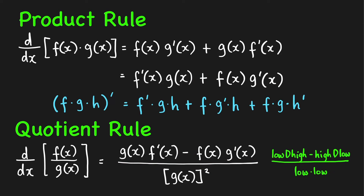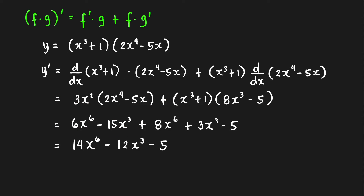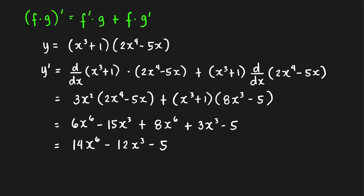Let's have some examples. First example: suppose we have y, which is a product of (x³ + 1) and (2x⁴ − 5x). We have the first factor as f and the second factor as g. Applying the product rule, take the derivative of one factor at a time.